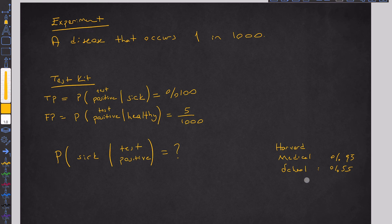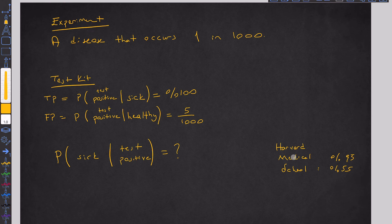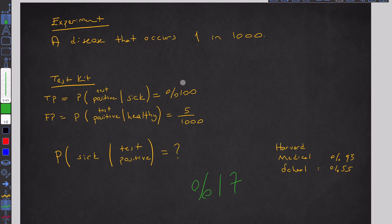This experiment was done with Harvard Medical School students in the 1970s. Some experts answered 95%. The average answer was 55%. The correct result is only 17%. It's incredible, right? How can it be? True positive is 100%, false positive is only 5 out of a thousand — how can this probability be so low?